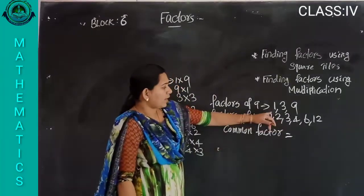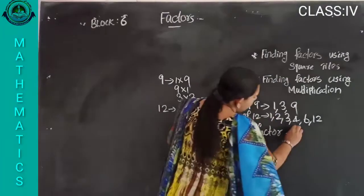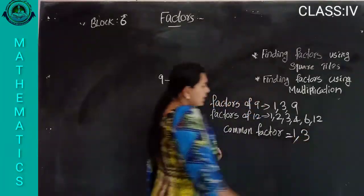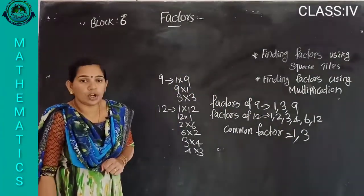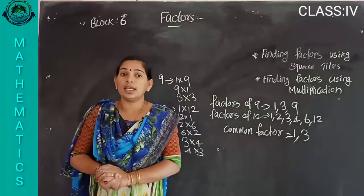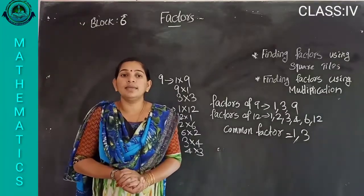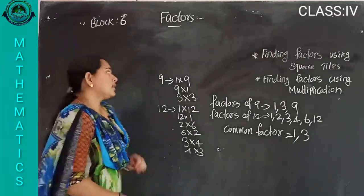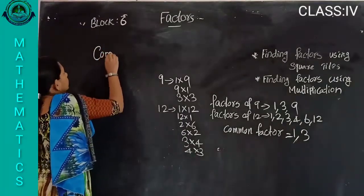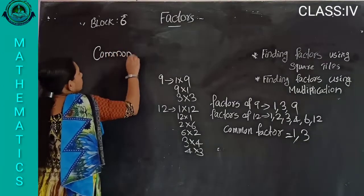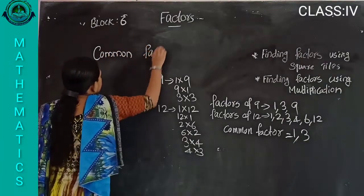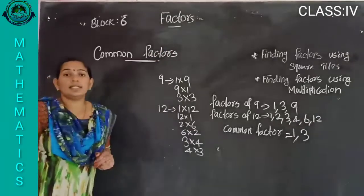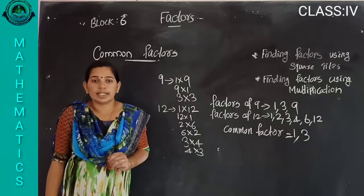Common factor. Which are the common factors here? One is common, then three. Any other numbers? No. Only one and three are common. So today we are going to discuss our new topic: common factors.